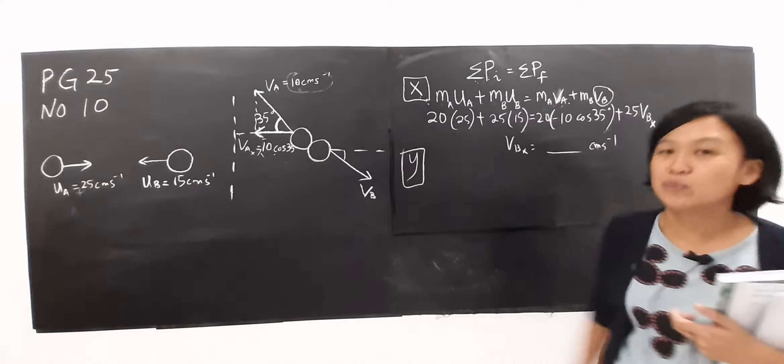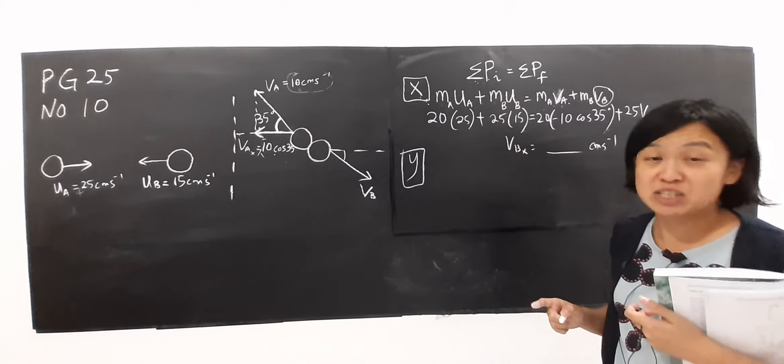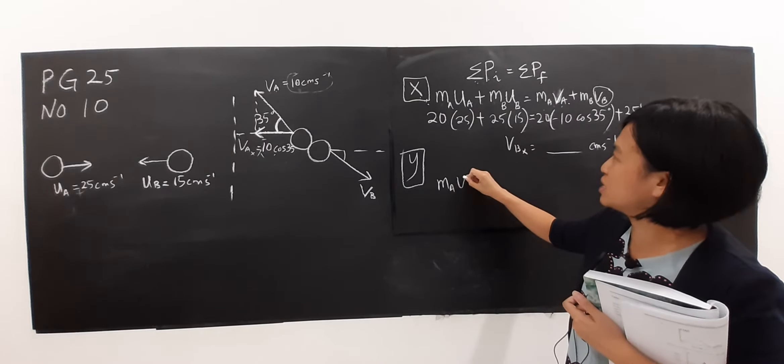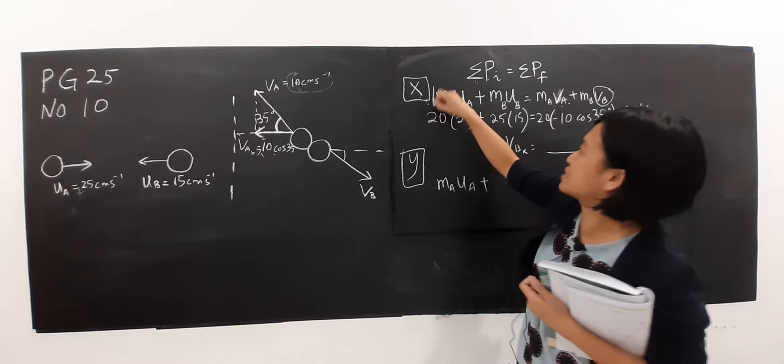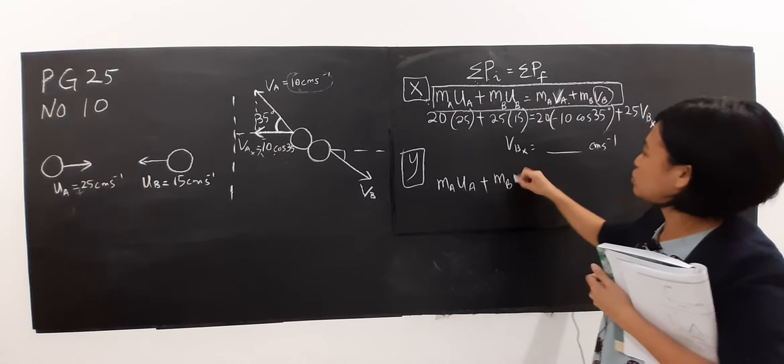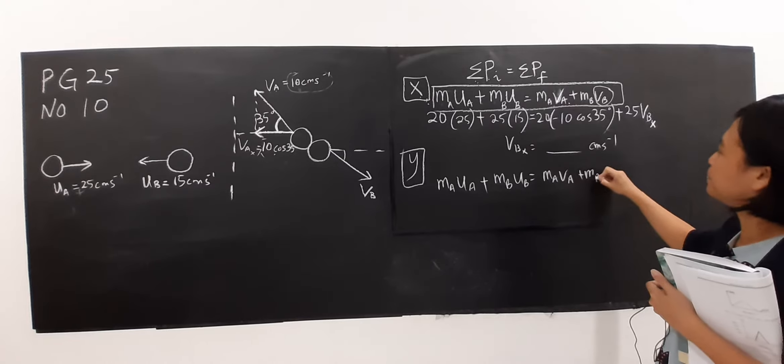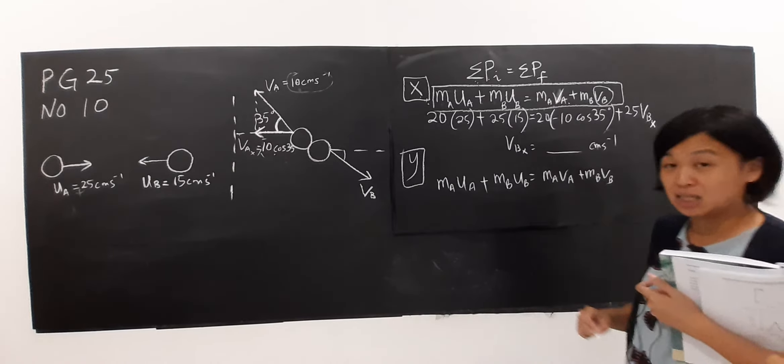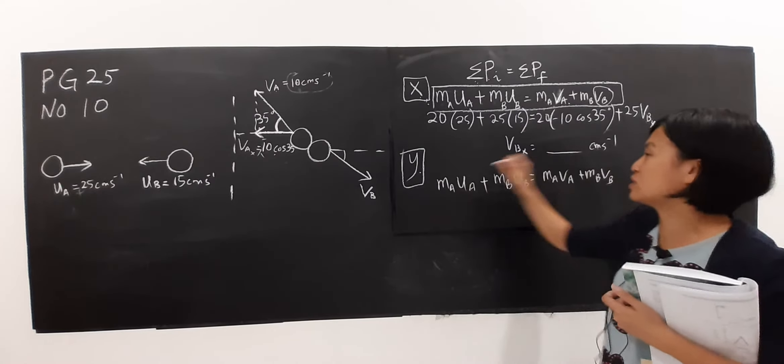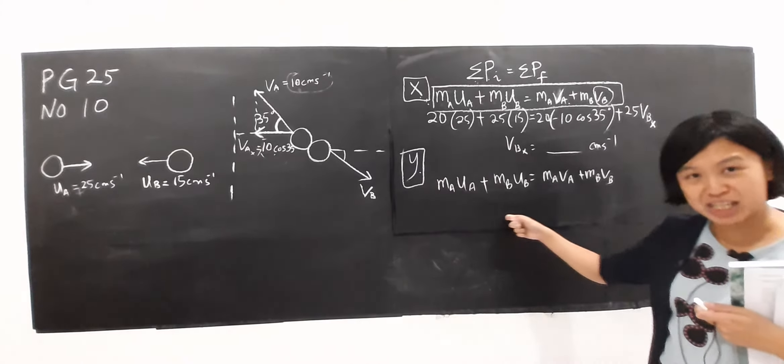How about for y-axis? For the principle of conservation of linear momentum we have such equation as well - the same equation. MA UA plus MB UB equals MA VA plus MB VB. This is the equation for y-axis.